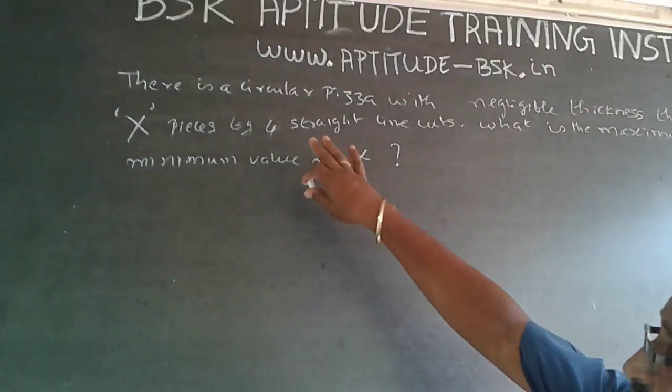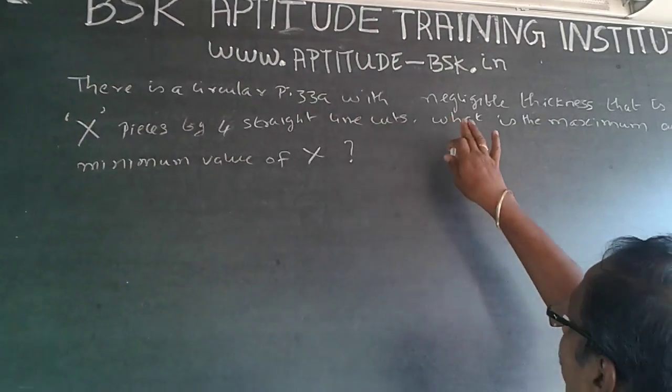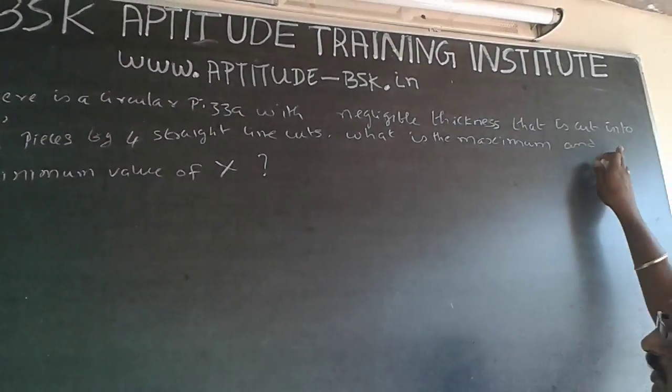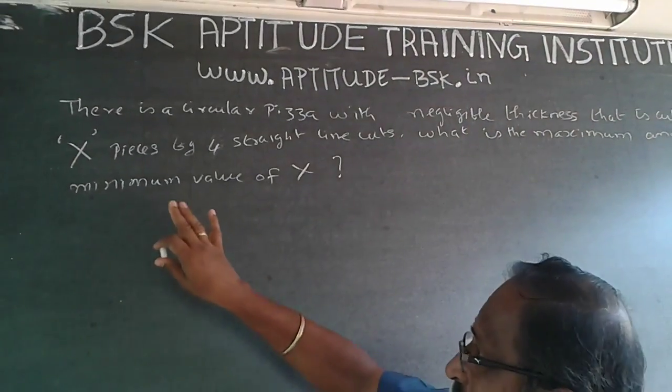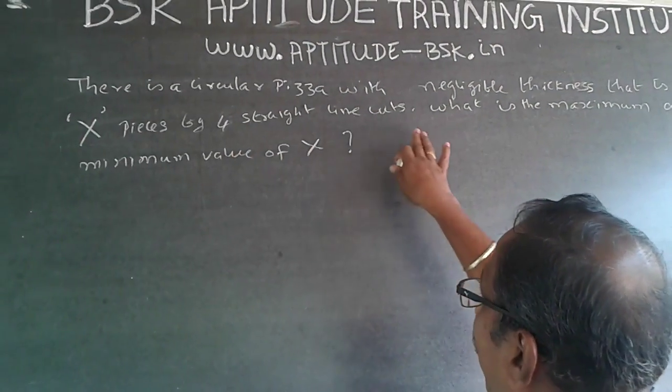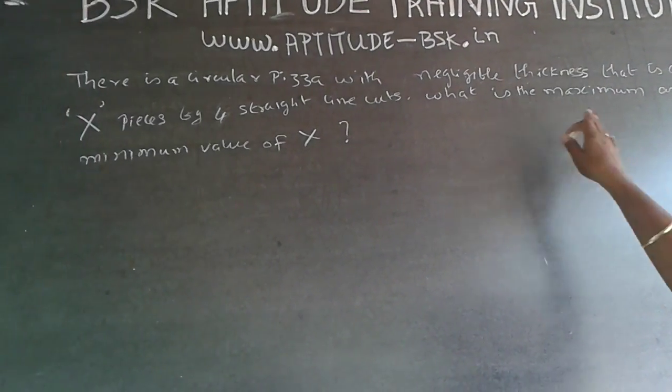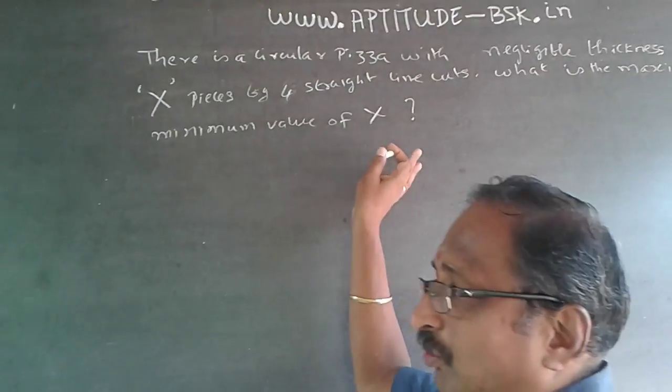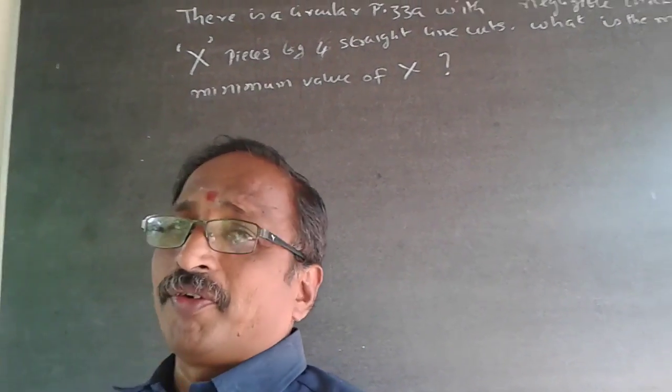In Cushiness, there is a circular pita with negligible thickness that is cut into X pieces by 4 straight line cuts. What is the maximum and minimum value of X?